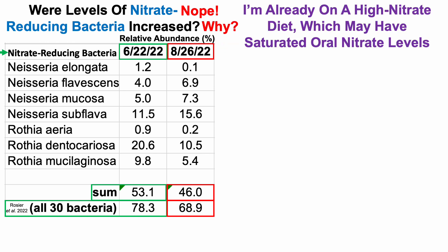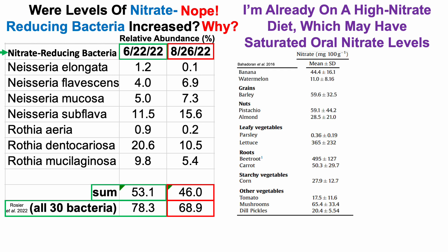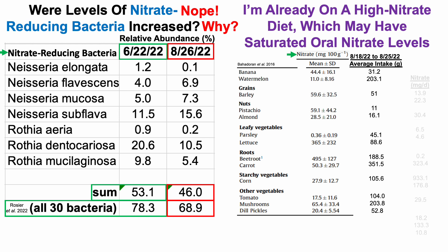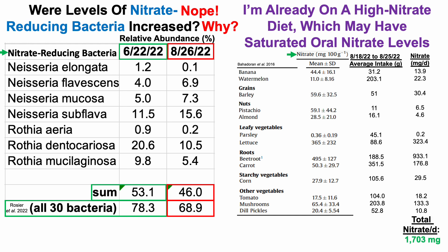So why? I'm already on a high nitrate diet, which may have saturated oral nitrate levels, limiting any further growth of nitrate-reducing bacteria. Looking at foods I commonly consume that contain nitrate — expressed as milligrams per 100 grams — and using my tracked average daily intake for the one week before test number two, I can calculate my average daily nitrate from each food. The sum comes out to about 1,700 milligrams of dietary nitrate per day.